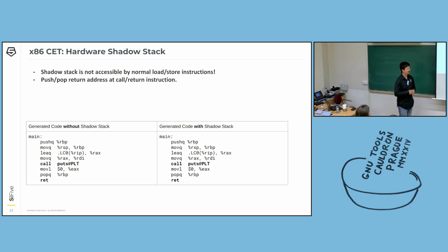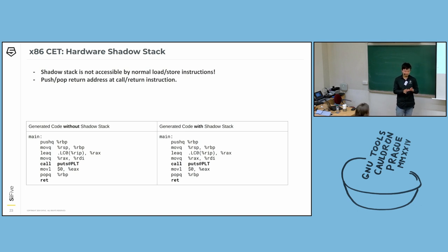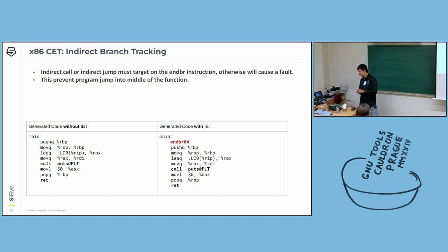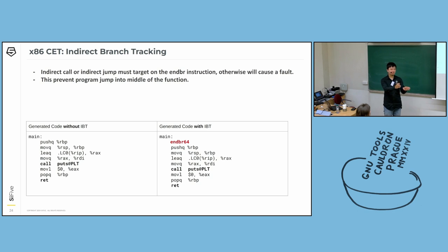This table shows two identical code sections — with and without the shadow stack — since it just requires an ISA update to enable shadow stack behavior. The code is unchanged but actually it puts a few more GNU properties in the object file to mark: hey, this is safe to enable shadow stack. The next mechanism is indirect branch tracking — any indirect call or indirect jump must target the ENDBR instruction, otherwise it will cause a fault. This prevents the program from jumping into the middle of a function, limiting entry points for indirect jumps which makes it harder for hackers to find a gadget sequence for attacking.